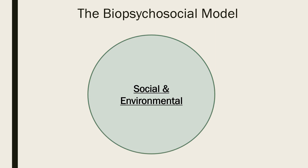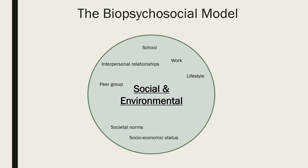Social factors include socioeconomic status, work, school and interpersonal relationships. For instance, losing one's job or ending a romantic relationship may place one at risk of stress and illness. Such life events may predispose an individual to developing depression, which may in turn contribute to physical health problems. Peer group, lifestyle and societal norms can also have a big impact. For example, the fashion industry and the media promote an unhealthy standard of beauty that emphasises thinness over health, exerting social pressure to attain this ideal body image, despite the obvious health risks, and could lead an individual to develop an eating disorder.